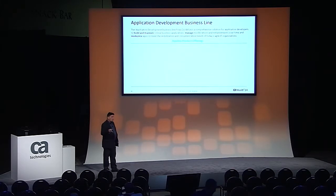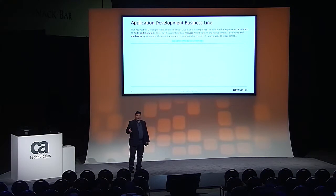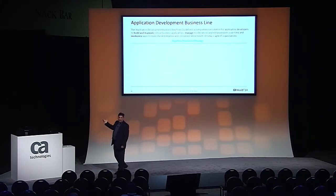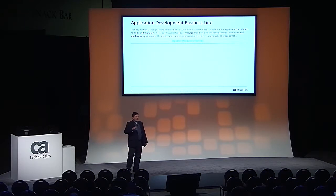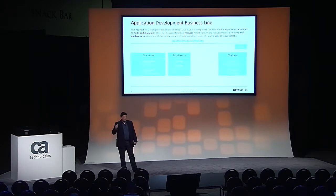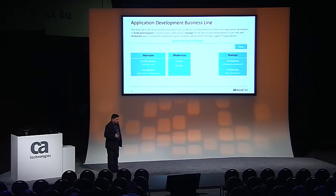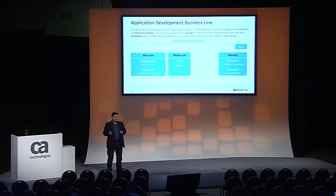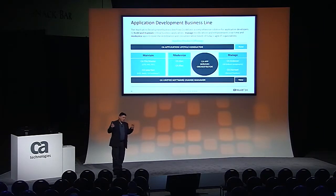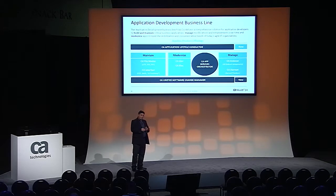How do I build a mobile front end — not just to an iPhone or Android, but to the Apple Watch, the Pebble, or my refrigerator screen? We just don't know where software's going to take us. We do know we want to leverage what we've built in the past — all the right logic, all the right data — and bring that information forward to make it accessible to our users. Today we're doing that by relaunching the application development business line: taking existing products like FileMaster, InterTest, modernization tools like Gen and Plex, software management tools like Endeavor and Harvest, augmenting them with new products, managing through the Application Lifecycle Conductor, building new services with App Services Orchestrator, and managing all assets end-to-end with Unified Software Change Manager.